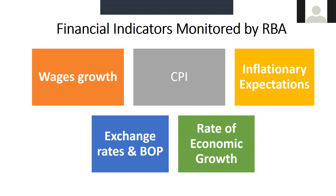Likewise, the Reserve Bank continues to monitor the Consumer Price Index, which relates to changes in the price level. If inflation targeting is our goal, it goes without saying that the Reserve Bank would continue to focus on the CPI very carefully. It also monitors inflationary expectations — how the overall market scenario is — and this is done through business surveys. If inflationary expectations are high, those expectations are likely to lead to the real situation. If people expect price levels to go up, it could boost aggregate demand in the current times and lead to relatively lesser aggregate supply, causing inflation to occur much quicker.